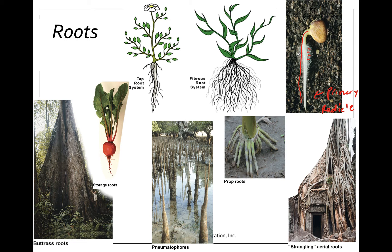There are typically two different types of root systems. If the radical root remains and becomes enlarged, that's called a tap root, common in dicot plants. For example, a carrot is a tap root — the main root is swollen and used for storing carbohydrates. It's energetically expensive because you're putting resources into one root, but it helps stabilize taller plants and prevents them from falling over.